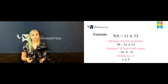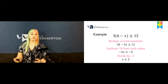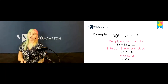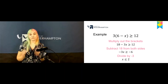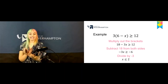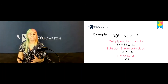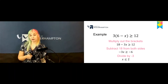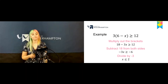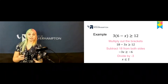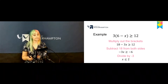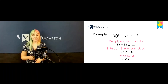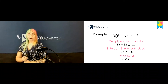First we expand the brackets, which gives us 18 minus 3x is greater than or equal to 12. We subtract 18 from both sides, leaving minus 3x is greater than or equal to minus 6. Then we divide each side by minus 3 — remembering to flip the inequality sign — which leaves us with x is less than or equal to 2.